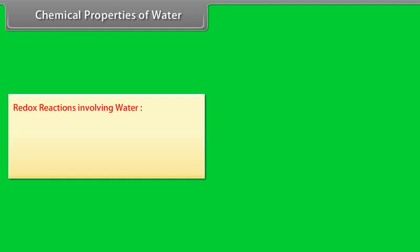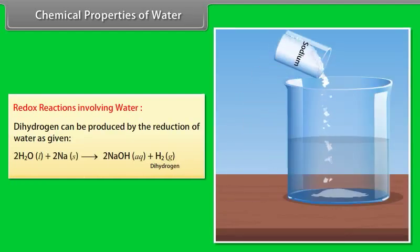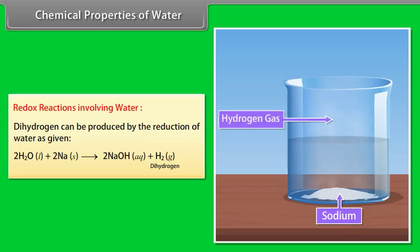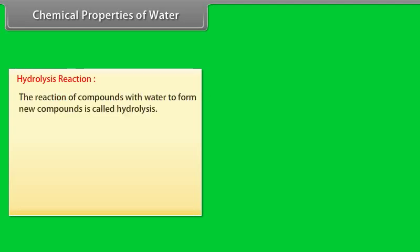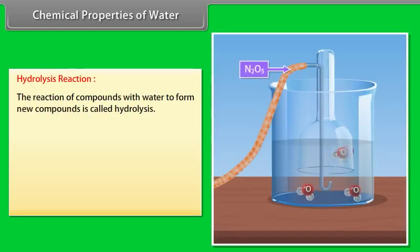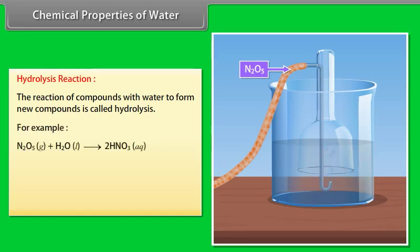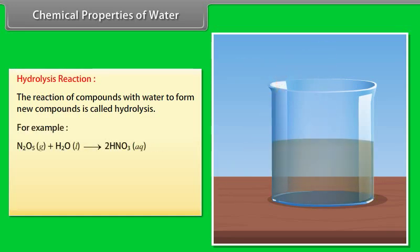Redox reactions involving water: Dihydrogen can be produced by the reduction of water as given. Hydrolysis reaction: The reaction of compounds with water to form new compounds is called hydrolysis. For example, dinitrogen pentoxide reacts with water to form nitric acid.